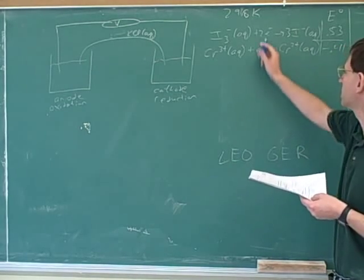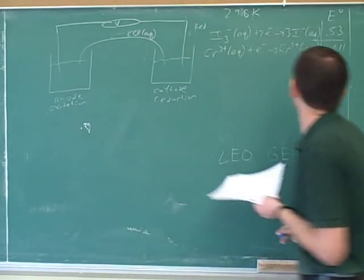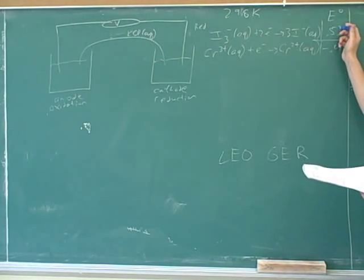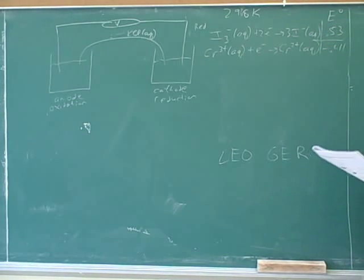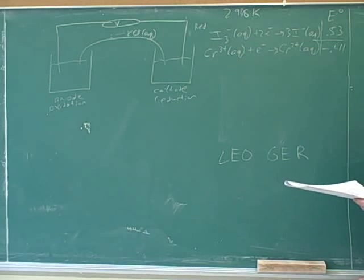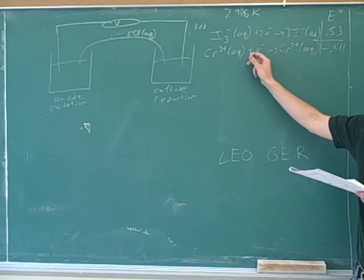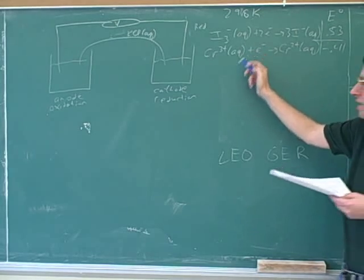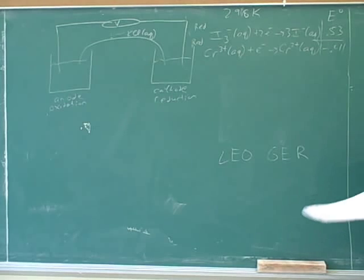So anyway, what did we decide? This is a reduction, right? So this must be a reduction potential. If they give you a number next to a reduction, that's the reduction potential. Generally speaking, you're more likely to see reduction potentials than oxidation potentials anyway. So how about this reaction? Is it an oxidation or a reduction? Right now it's a reduction. So this must also be a reduction potential.